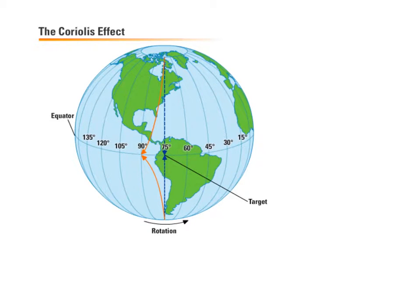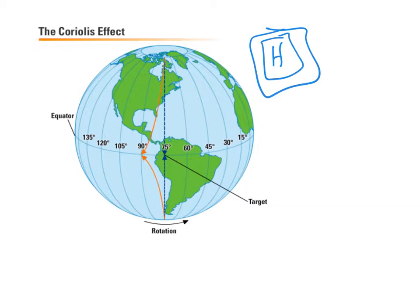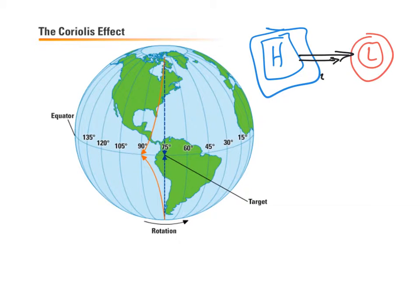In a future video we'll talk about how winds are formed. Basically, we have areas of high pressure with a lot of air, and areas of low pressure with a little bit less air. What we notice is that air from a high pressure area wants to move to a low pressure area, and that's how we make wind.